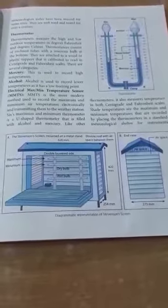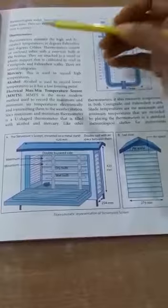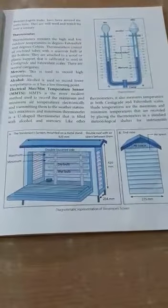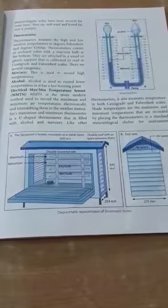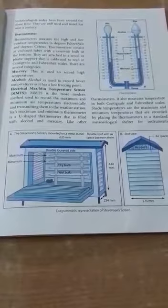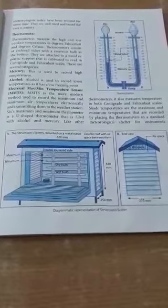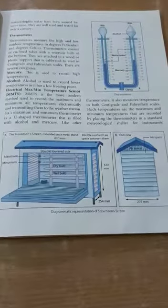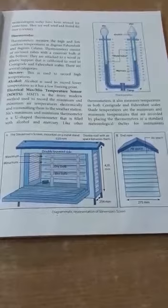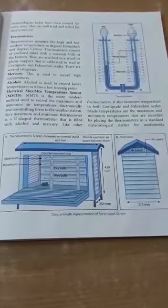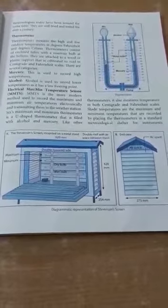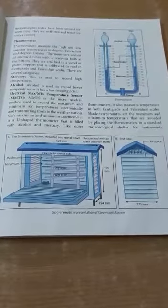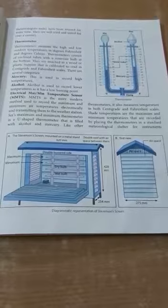The first one is thermometer. Thermometers measure the high and low outdoor temperatures in degrees Fahrenheit and degrees Celsius. Thermometers consist of enclosed tubes with a reservoir bulb at the bottom and they are attached to a wood or plastic support that is calibrated to read in centigrade and Fahrenheit scales.